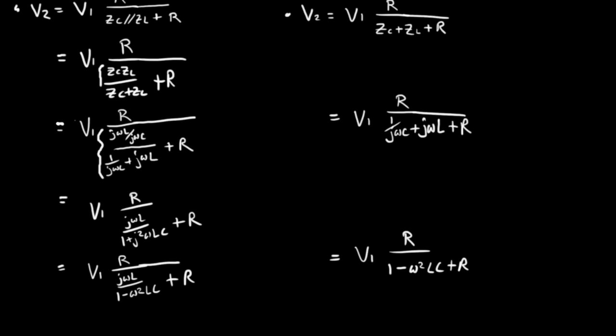And then finally, simplify it a little more to the main thing I want here is I've got a 1 minus omega squared LC term here for the parallel resonant circuit and the same term over here for the series resonant circuit.